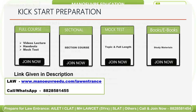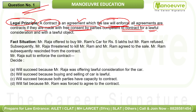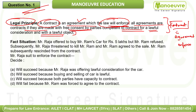Question number one. Legal principle: A contract is an agreement which the law will enforce. All agreements are contracts if they are made with free consent by parties competent to contract, for lawful consideration, with a lawful object. This is the most important principle because it covers all elements of contract — agreement, enforceability by law, two parties, free consent, competent parties, lawful consideration, and lawful object.